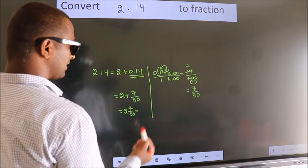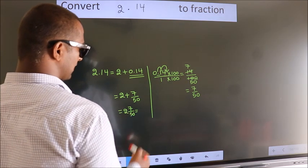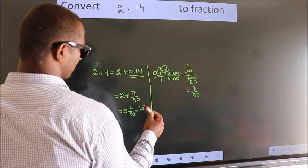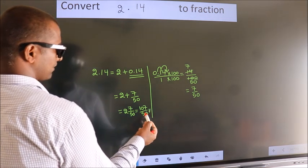In improper fraction, it is 2 into 50, which is 100, plus 7, equals 107 by 50. This is our fraction.